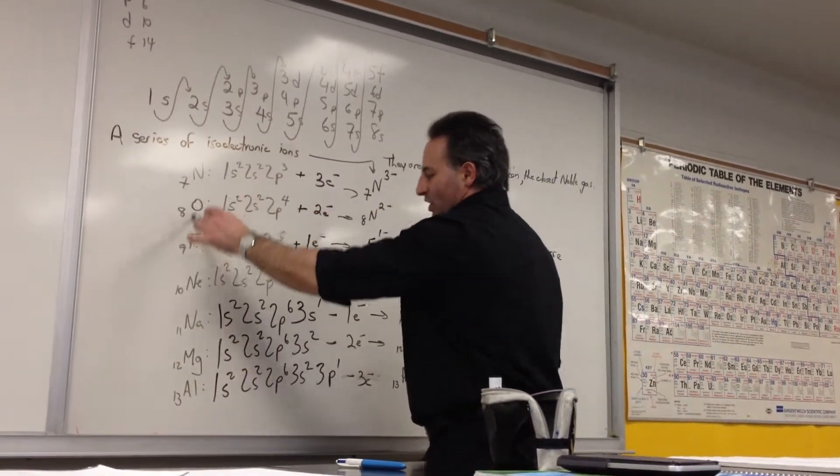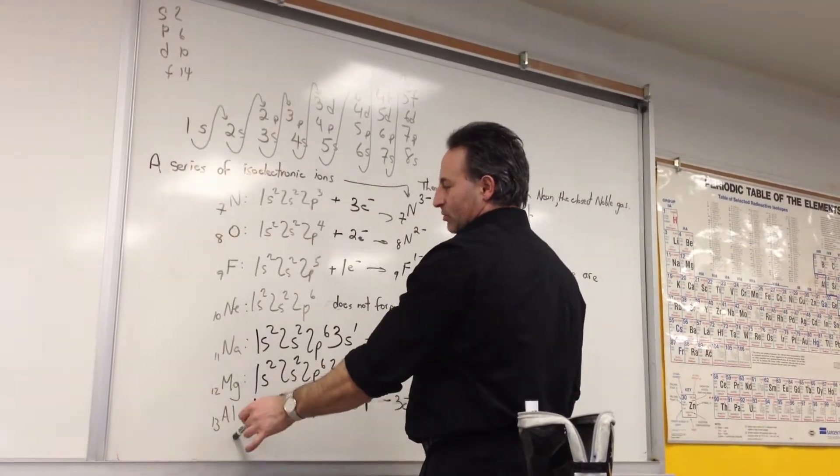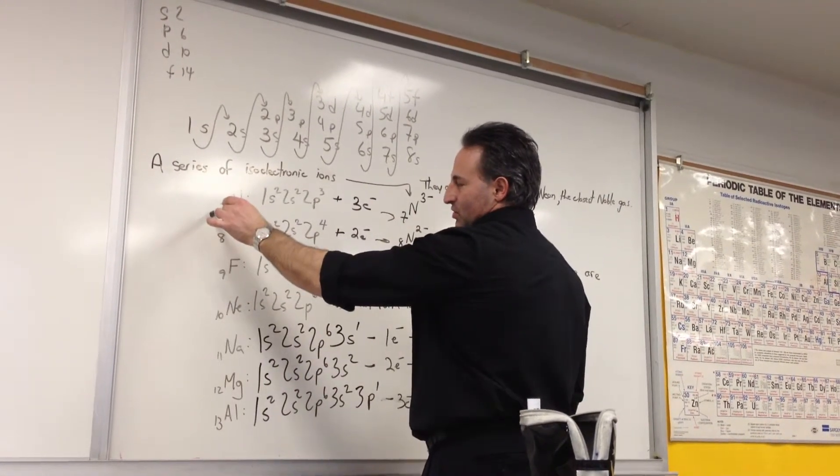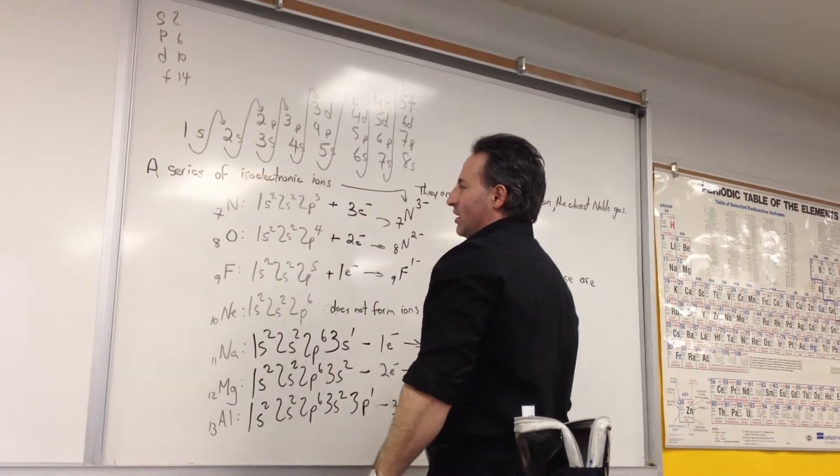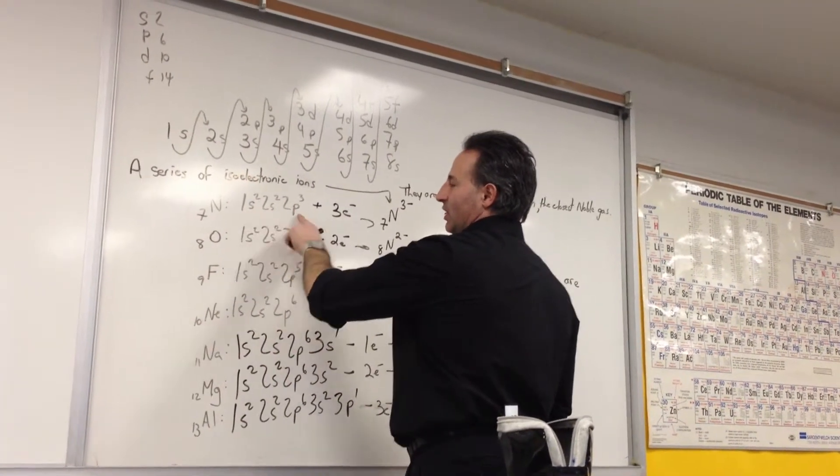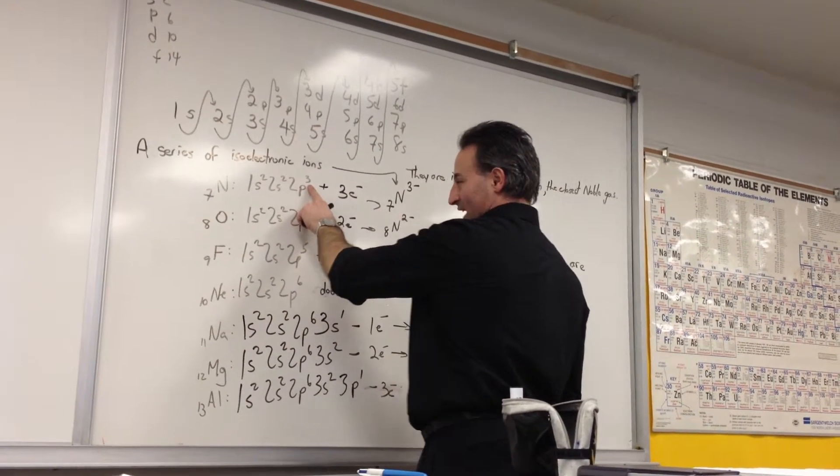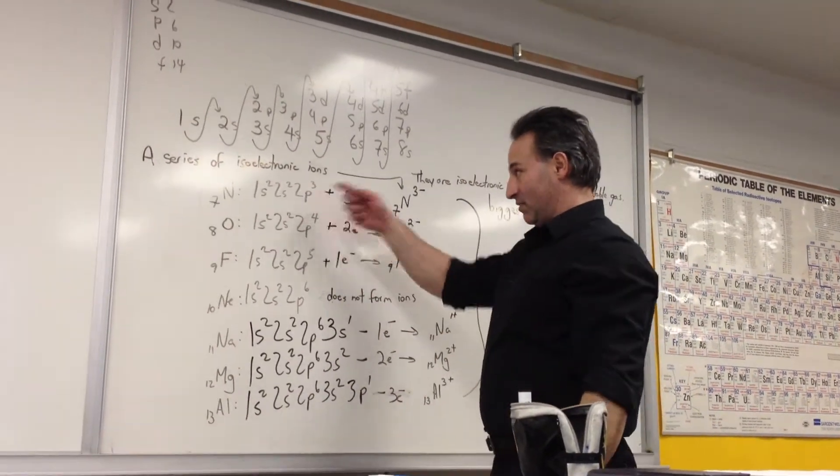We wrote the electron configuration of seven different atoms, starting from nitrogen all the way to aluminum. Nitrogen possesses only seven electrons with its seven protons, so that it's 1s² 2s² 2p³. So these two shells are filled. The P-shell is only partially filled. It's only half filled. There are only three electrons in it, although it has a capacity for six.